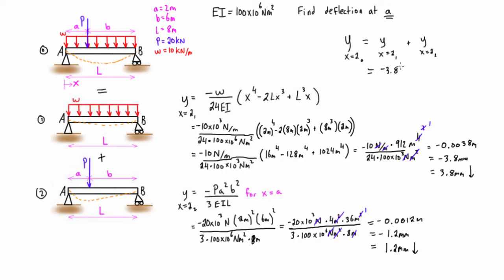So we have these values here, we're going to throw them into our expression. We have negative 3.8 millimeters, that's the deflection caused by the distributed load at x equals 2, minus the deflection caused by the point load at x equals 2 which is 1.2 millimeters. We're going to find that our y at x equals 2 in the actual system is going to be equal to negative 5 millimeters, or equal to, like we said, 5 millimeters in the downward direction.